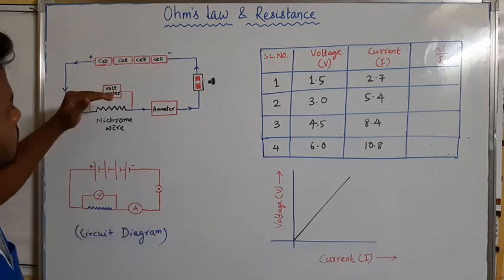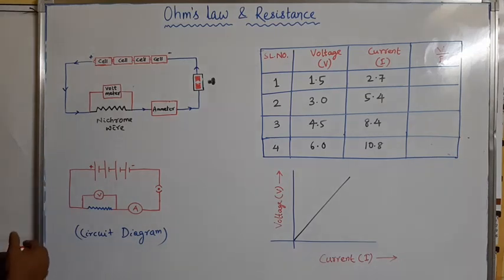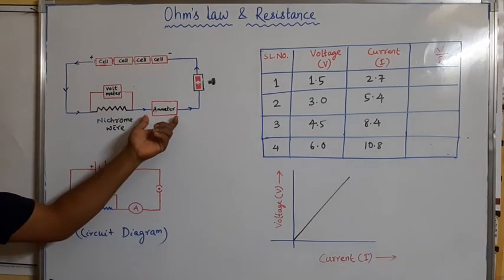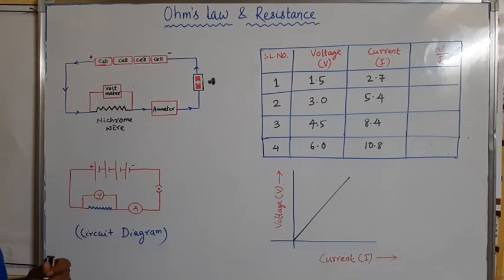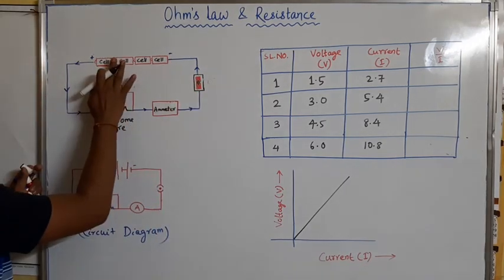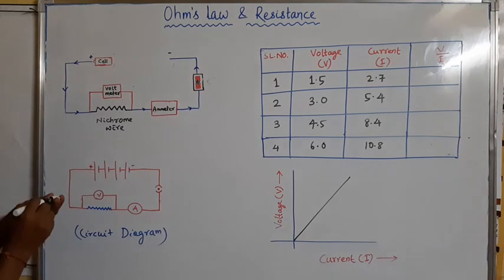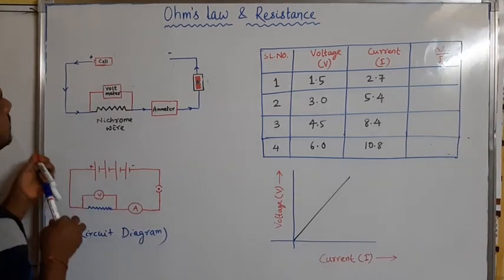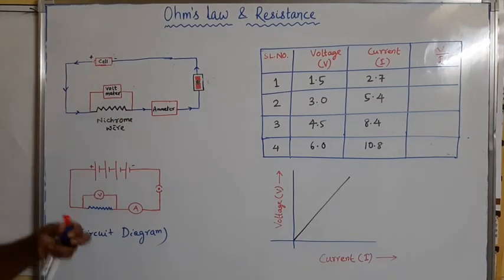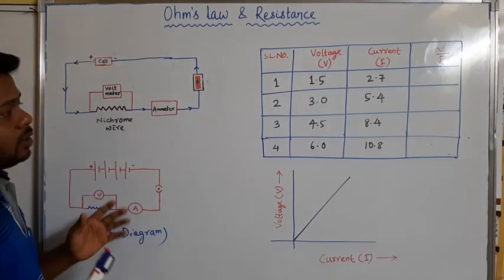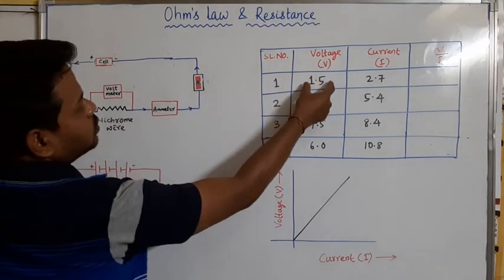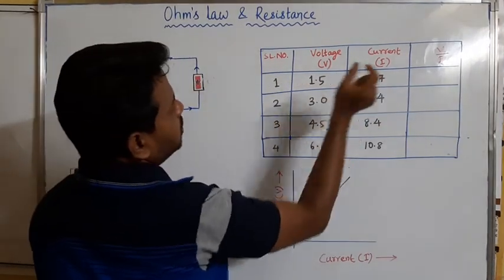In this activity, first we will take only one cell. The voltmeter reads or measures the potential difference (voltage), whereas the ammeter measures the amount of current flowing in the circuit. When we make the switch on with only one cell connected, we find the voltmeter and ammeter readings and write them in a table. Since one cell has 1.5 volts, the first case shows voltage 1.5 V and the current in the ammeter is showing 2.7 A.